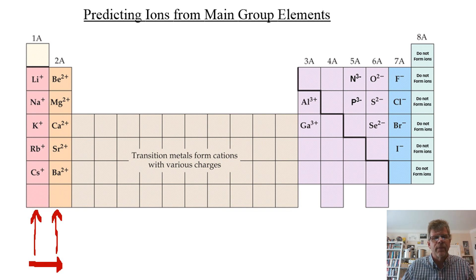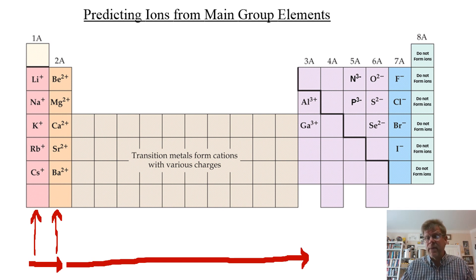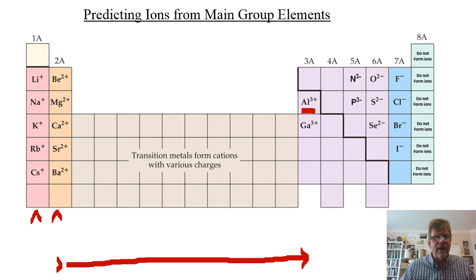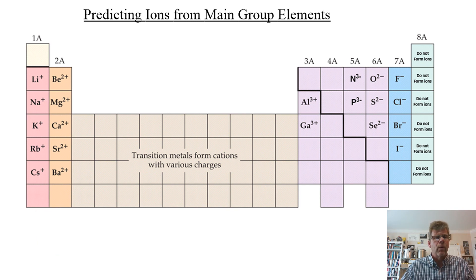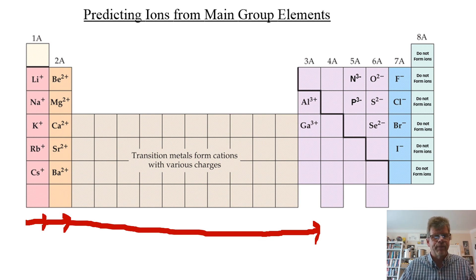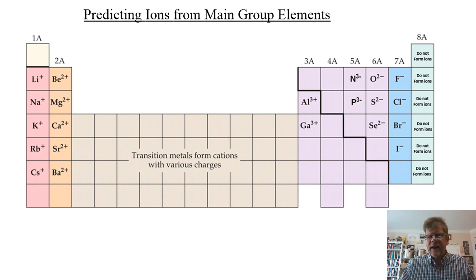Skipping over the d-block transition elements, there is a column of metals in the p-block — aluminum being the main one — and those are 3+. Now a pattern fully emerges: if we count over from the left, going through one column that's +1, two columns is +2, three columns — skipping the transition metals — is +3. One, two, three, all positive. That's a pattern, not rote memorization.